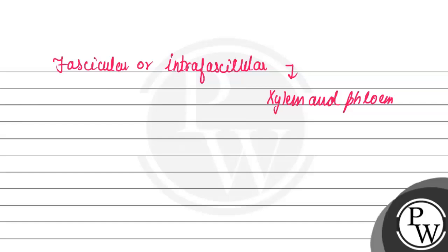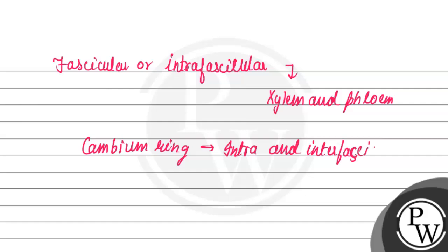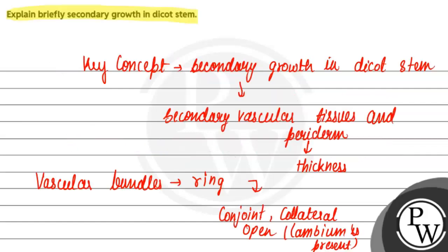The vascular bundles are meristematic during secondary growth due to intrafascicular cambium. Together they form a cambium ring. This is all about secondary growth — thickness or girth increases. I hope you understood it well, best of luck.